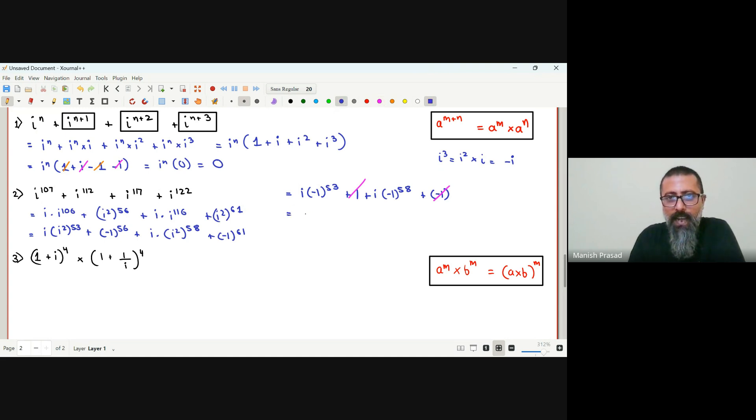So we can cancel these. Positive 1, negative 1 ko cancel kar dete hai. Ab hamare pas i, negative 1 to the power of 53, so minus i ho jaega, plus i negative 1 to the power of 58. Even hai.